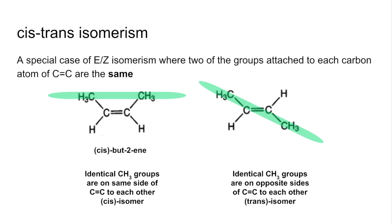The left-hand molecule will be called cis-but-2-ene, the right-hand molecule will be called trans-but-2-ene. I'll just do a quick reminder of E/Z isomerism now, so in case we have to label them as E-but-2-ene or Z-but-2-ene, how would we do that?